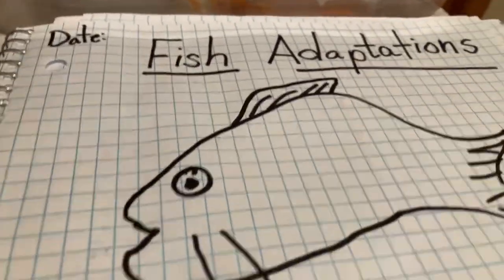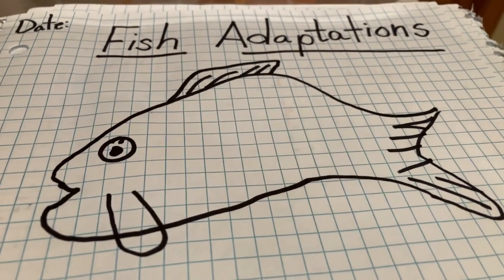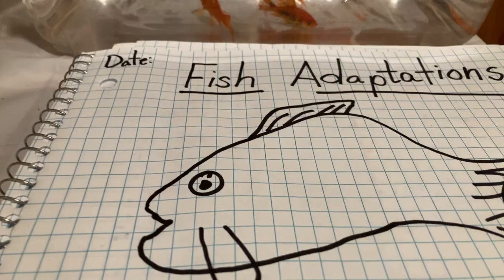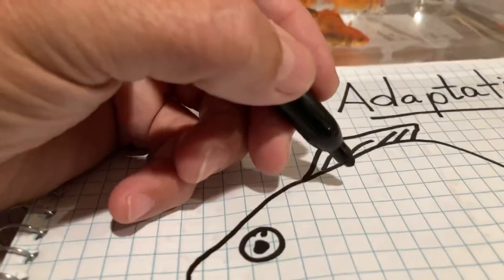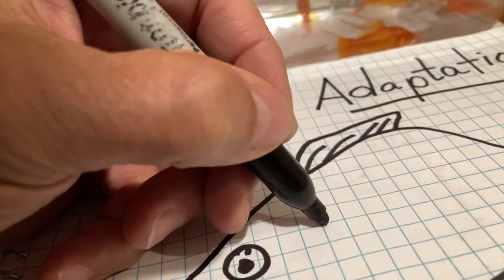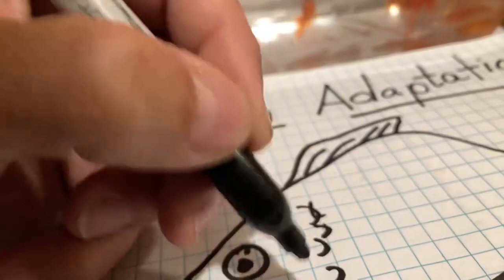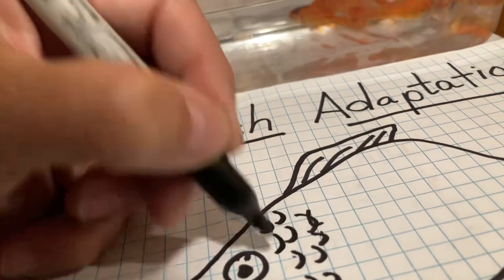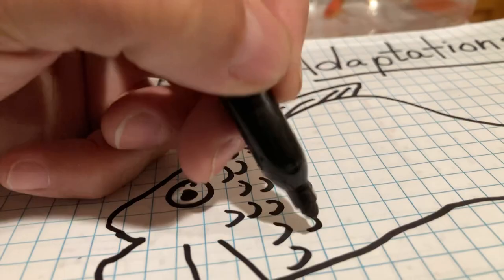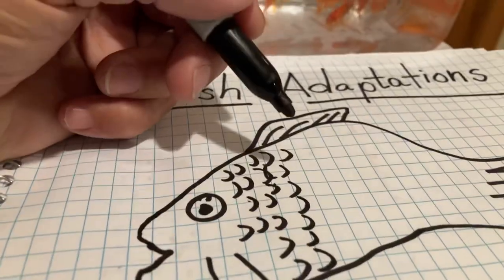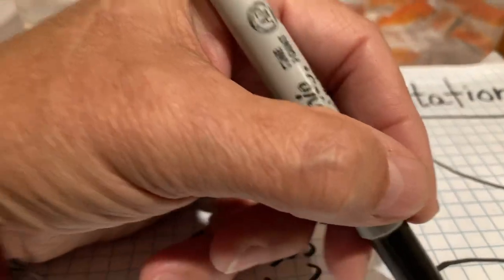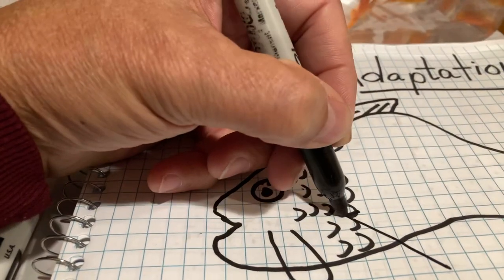Go ahead and draw the outside of your fish. After you draw the fish, we're going to label a few parts. First, fish are covered with scales — that's a distinct part of their body covering. One other group of organisms also has scales, and that would be reptiles. Now I want you to put an arrow and write down 'scales.'